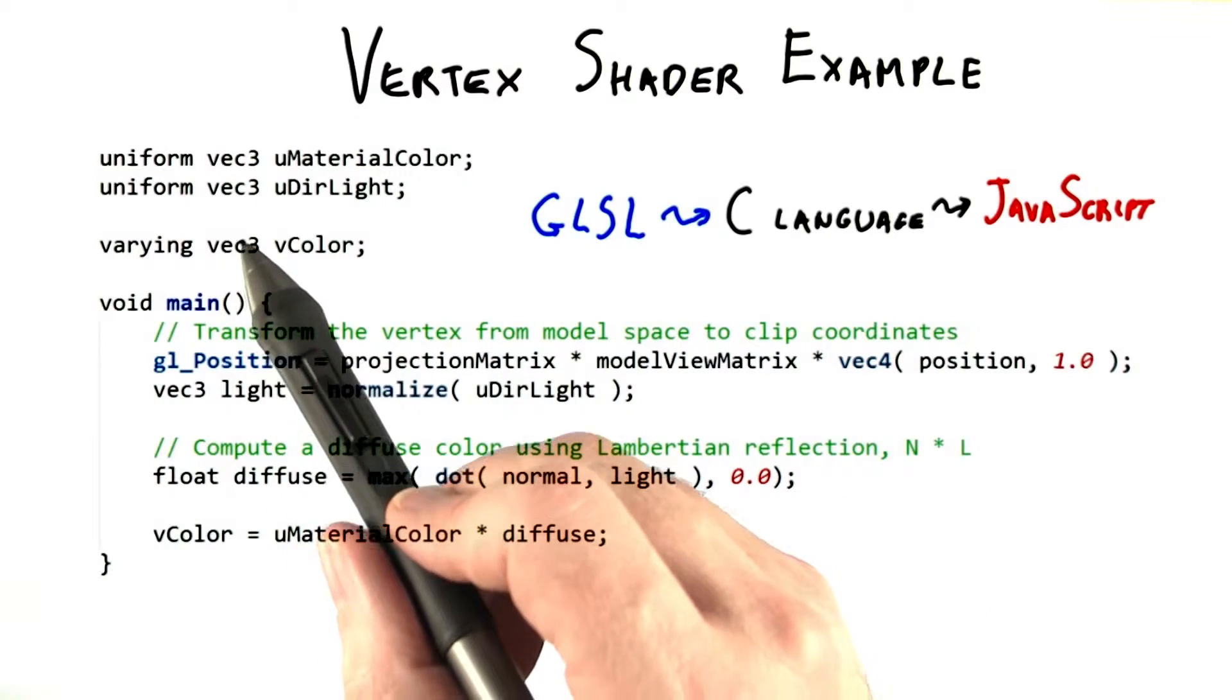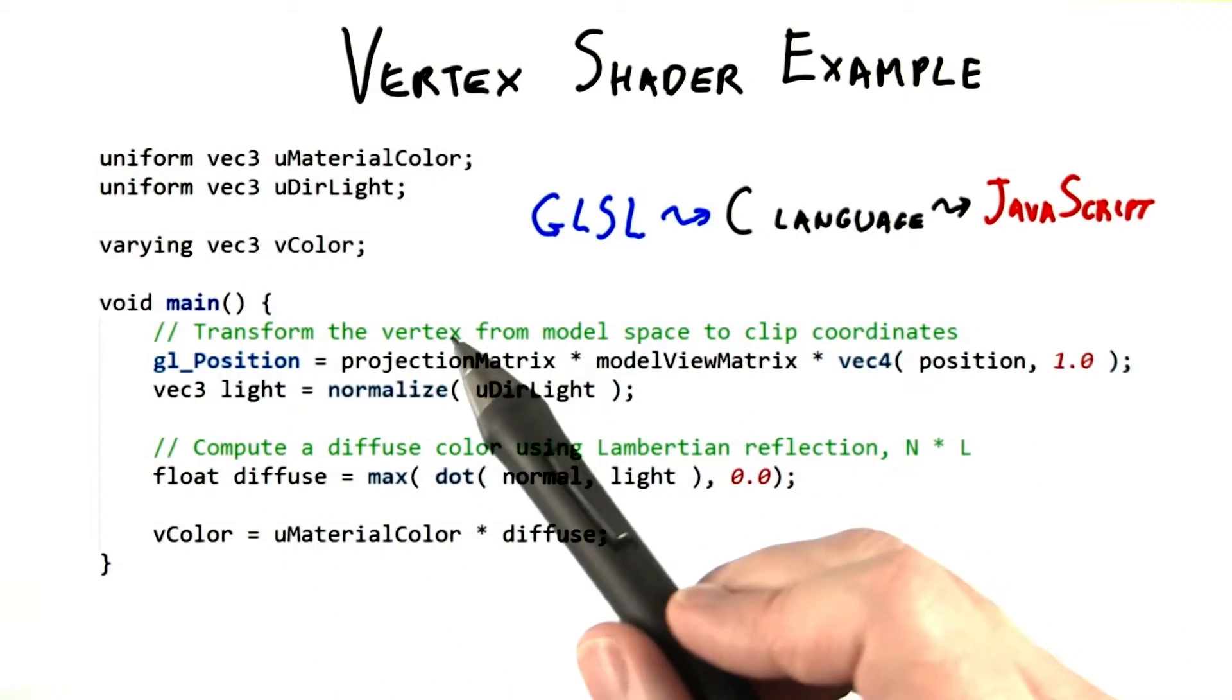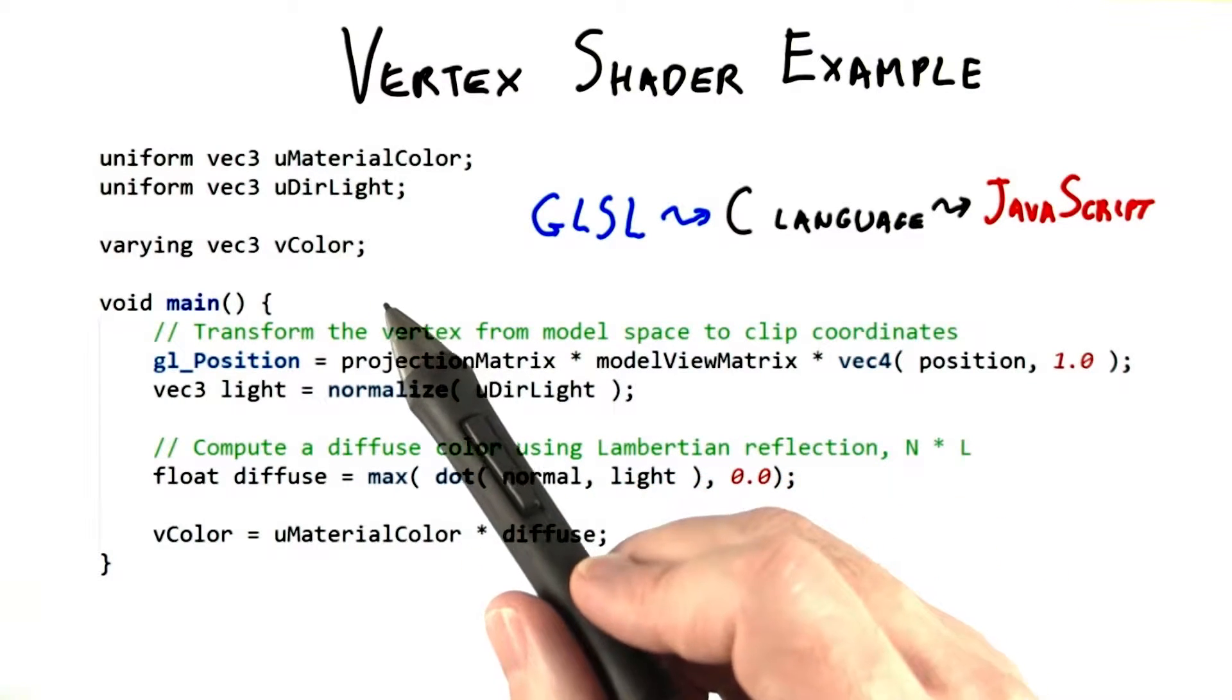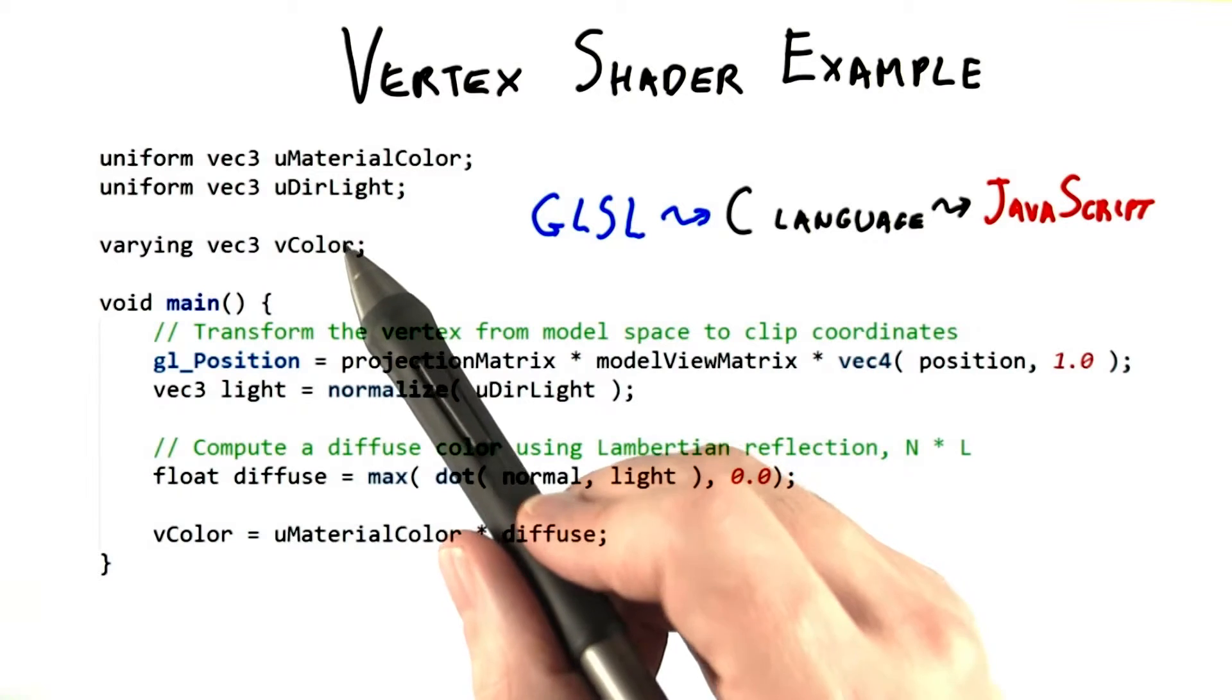Vec3 means a three element vector. RGB for the color, XYZ for the lights direction. Next is a varying color, V color, which is an output color. We'll use this in the fragment shader.